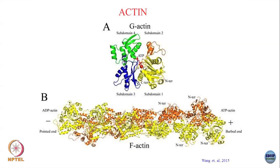Because of the way the subunits assemble, there is a structural asymmetry, and one end of these actins will look slightly different from the other end if you were to look at it in an electron microscope. That leads to identification of two different ends. One end is called the plus end, the other is called the minus end. In the literature, the plus end is called the barbed end and the minus end is called the pointed end.